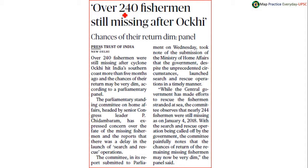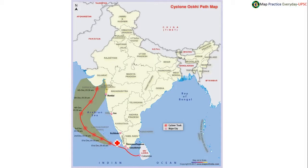Over 240 fishermen are still missing due to Oki — Oki was a cyclone, not a place. This is the track of Oki: it almost started from near Sri Lanka and went northward. The cities hit included Colombo in Sri Lanka, Kanyakumari, Thiruvananthapuram, Kozhikode, Goa, and Mumbai.